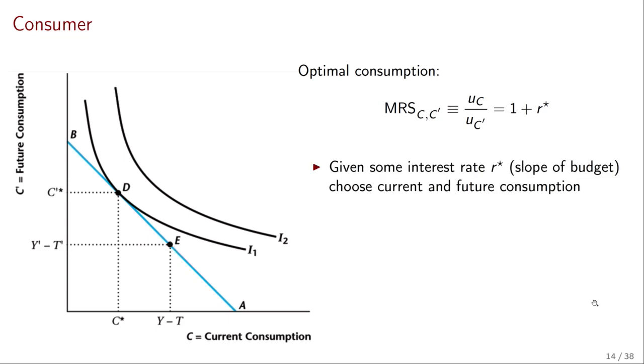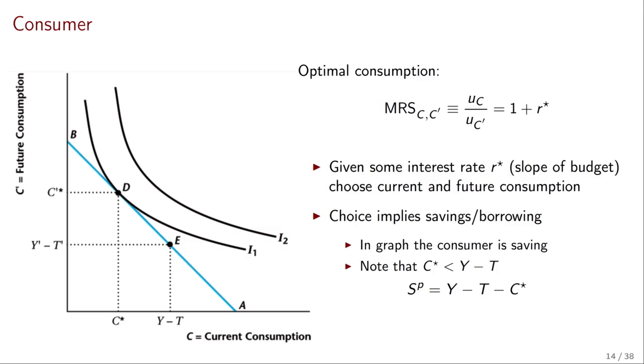Now, given some interest rate, that's going to set the slope of this line. Then we're going to get exactly how much consumption the consumer wants. Now, an important thing is that once you see the graph comparing consumption with the endowment point tells you if the consumer is a borrower or a saver. In this case, we have a saver because consumption is lower than disposable income. Remember that savings are equal to disposable income minus consumption.